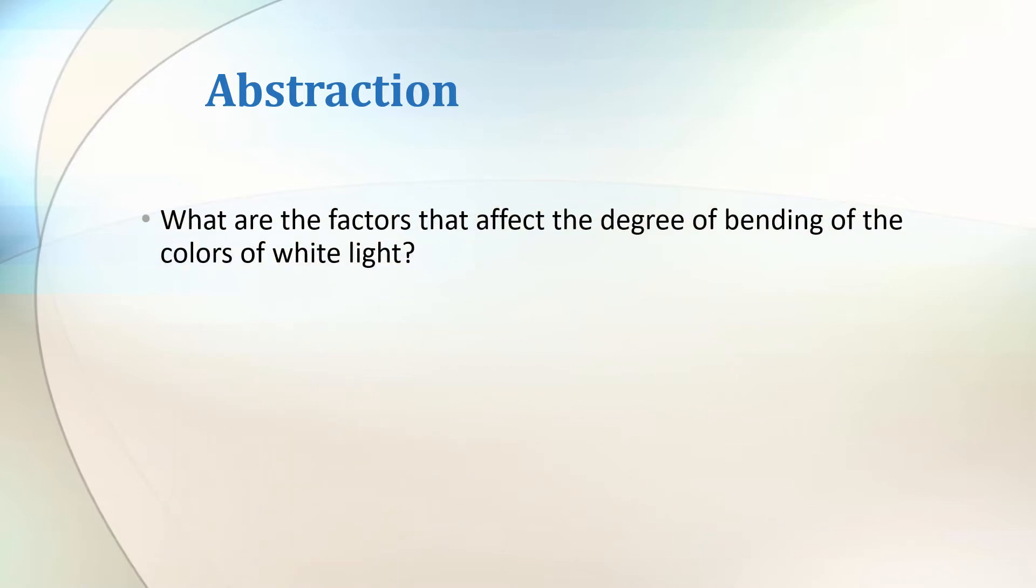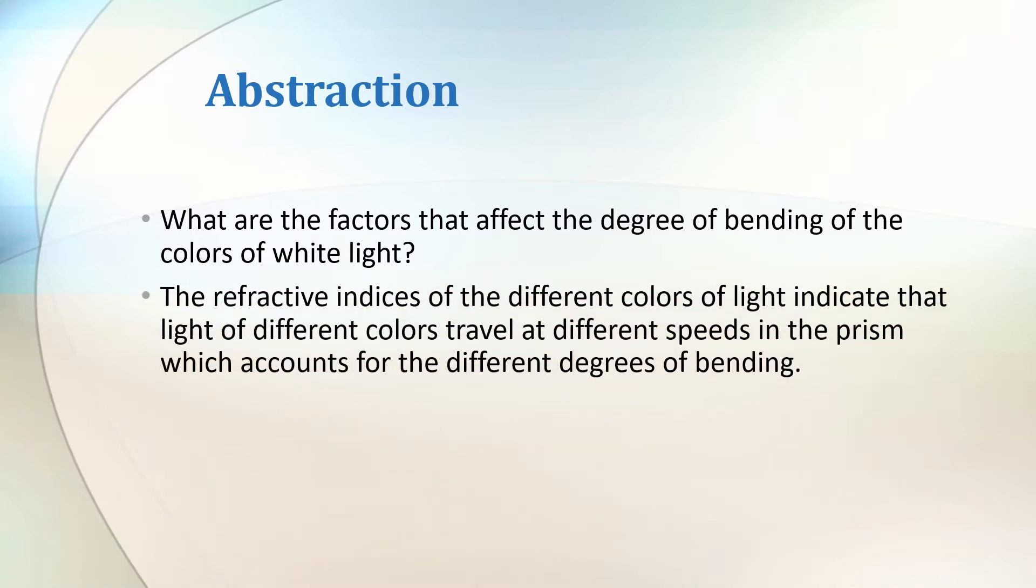But what factors affect the degree of bending of the colors of white light? The refractive indices of the different colors of light indicate that light of different colors travel at different speeds in the prism, which accounts for the different degrees of bending.